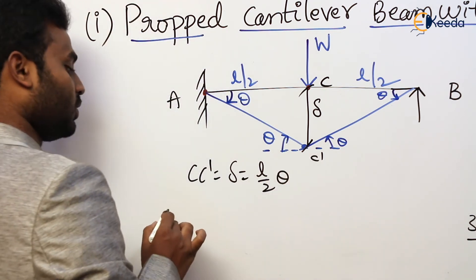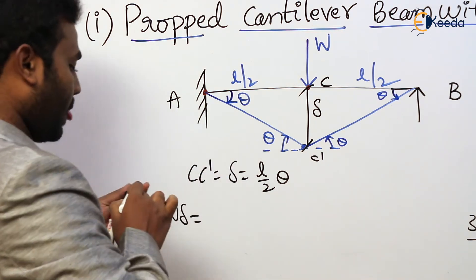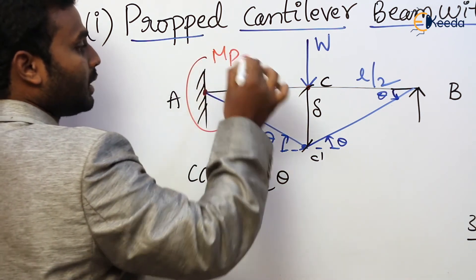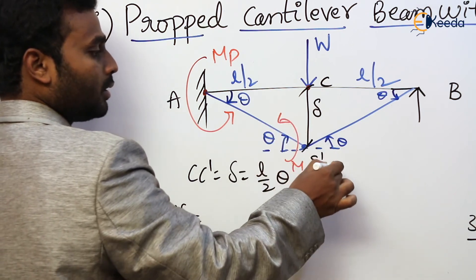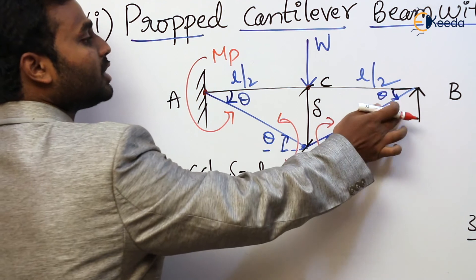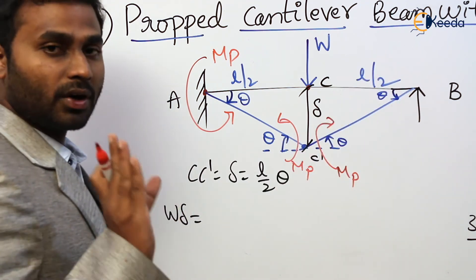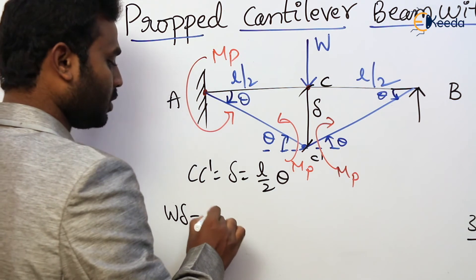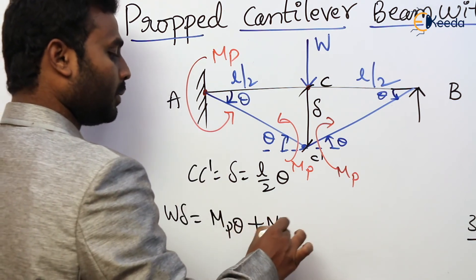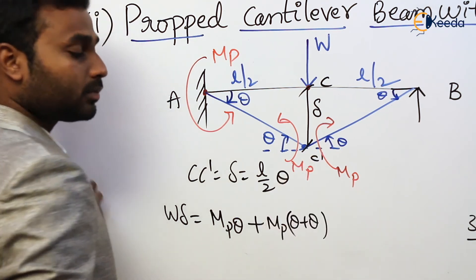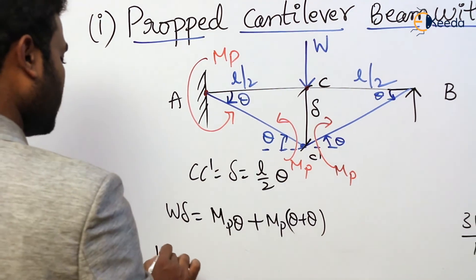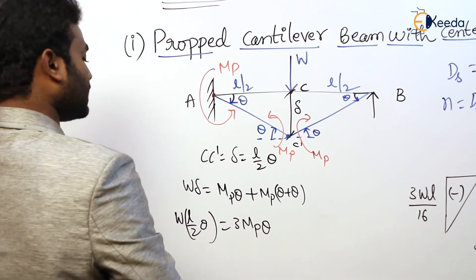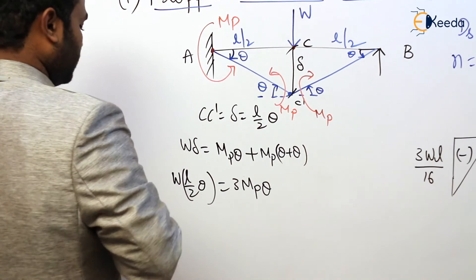External work is W × delta = W × (L/2) × theta. Internal work is contributed by the plastic hinges at A and C: at A the plastic moment MP resists rotation by theta, and at C the plastic moment MP acts through a total rotation of theta plus theta (= 2theta). So internal work = MP × theta + MP × 2theta = 3MP × theta. Setting external equal to internal: W × (L/2) × theta = 3MP × theta, and cancelling theta from both sides gives the collapse load.